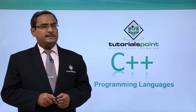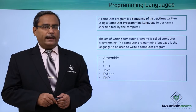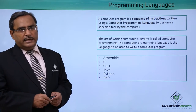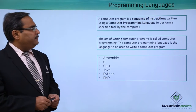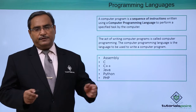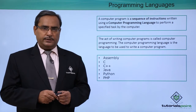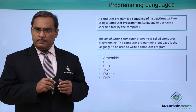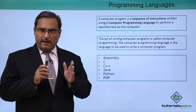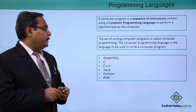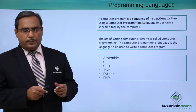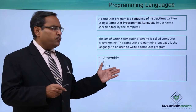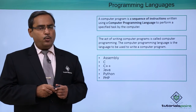We shall discuss C++ as a programming language. A computer program is a sequence of instructions written using a computer programming language to perform a specific task by the computer fruitfully and efficiently. They must be written in the proper sequence so that the purpose is served, with minimum instructions and efficient execution. The act of writing computer programs is called computer programming. The computer programming language is the language used to write a computer program.